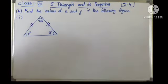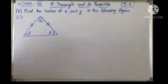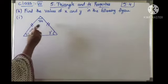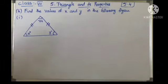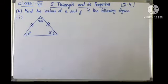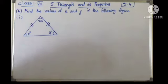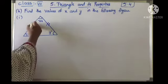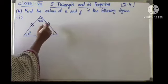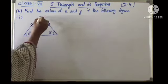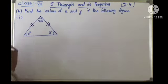Find the values of x and y in the following figure. Here they gave a triangle and these 2 sides are equal. If a triangle has 2 sides equal, we call it an isosceles triangle. In an isosceles triangle, the angles opposite to the equal sides are equal.